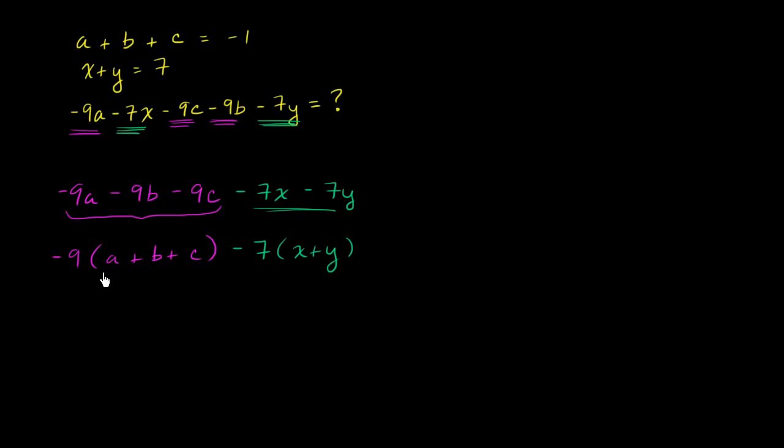What is a plus b plus c equal to? Well, they tell us right over here. a plus b plus c is equal to negative 1. This whole expression is negative 1, at least in the parentheses. And what is x plus y equal to? Well, they tell us right over here. x plus y is equal to 7.